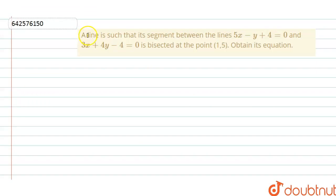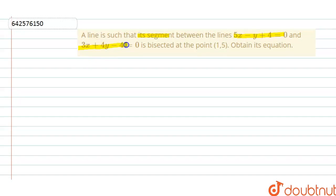Hello everyone. The question says that a line is such that its segment between the lines 5x minus y equals 0 and 3x plus 4y minus 4 equals 0 is bisected at the point (1, 5). Obtain its equation.